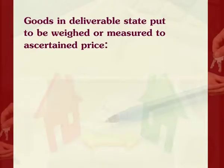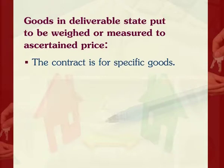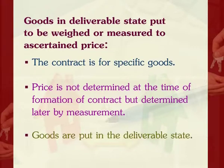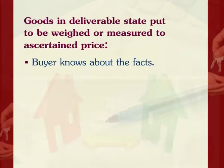Goods in deliverable state to be weighed or measured to ascertain price. If the goods are not weighed or measured at the time of making the contract of sale, the ownership transfers after fulfilling certain conditions: the contract is for specific goods; price is not determined at formation but determined later by measurement; goods are put in deliverable state; and the buyer knows about the facts. For example, Rakesh purchases a bundle of fodder at Rs. 100 per quintal from Damu. Damu has to weigh the fodder to ascertain the price. The property passes to Rakesh when Damu has weighed the fodder and notice thereof is given to Rakesh.